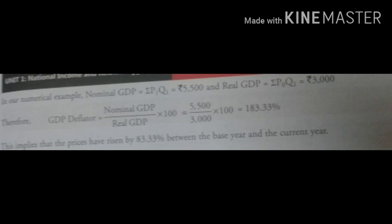183.33% implies that the price has risen by 83.33% between the base year and the current year — meaning current year prices are higher than base year prices. You may now solve examples based on real GDP, nominal GDP, and the GDP deflator while understanding these terms.